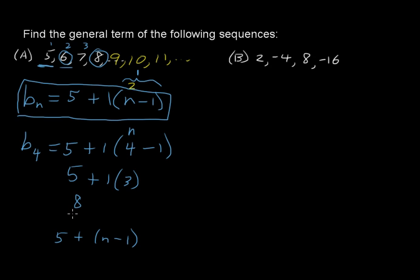You could drop those parentheses completely because this is just addition, so you could say 5 minus 1, so that's 4, and we'll write the n first, so n plus 4, so the general term is n plus 4.